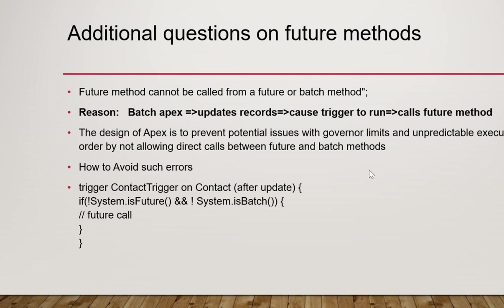A future method cannot be called from either a future or batch context. This is not allowed to prevent potential issues with governor limits and unpredictable execution — since with asynchronous methods, we don't know how long they will execute.